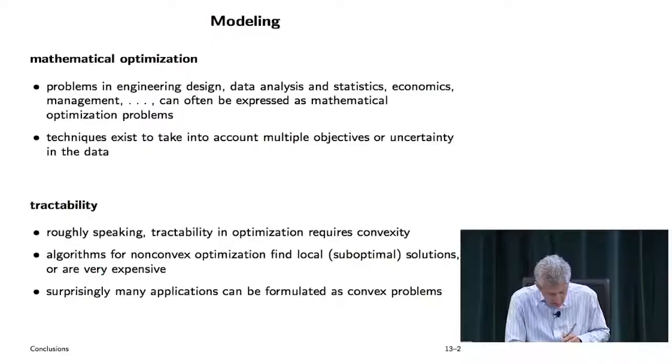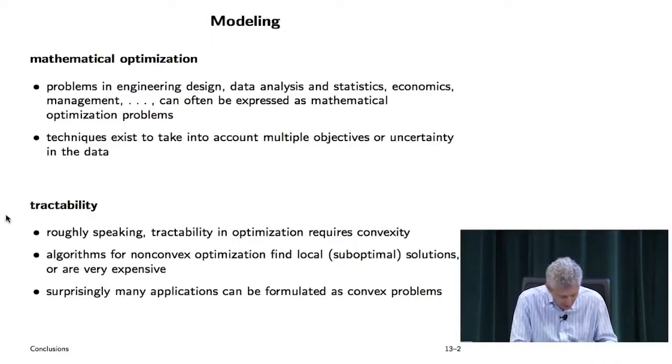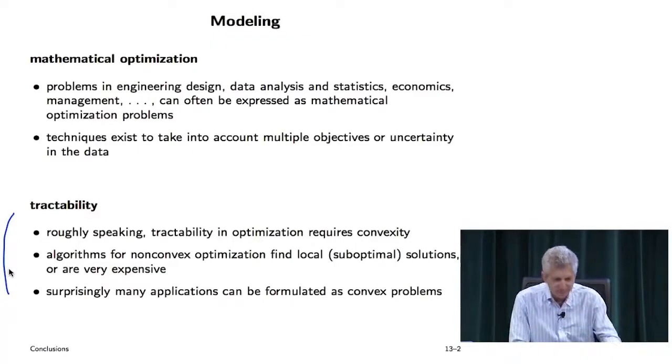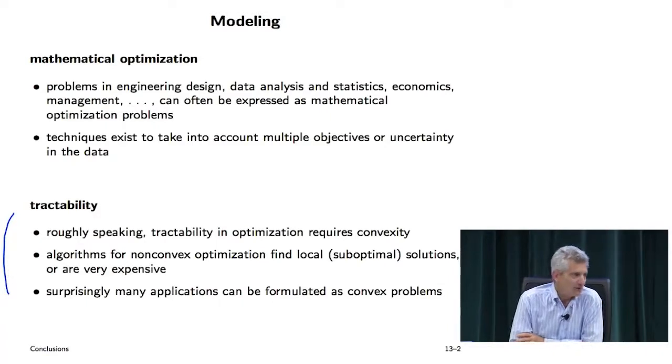Some constraints are really non-negotiable — covariances should definitely be positive semi-definite, powers should definitely be greater than or equal to zero. But a lot of the others are not. The main point is that roughly speaking, tractable problems are the ones that are convex.